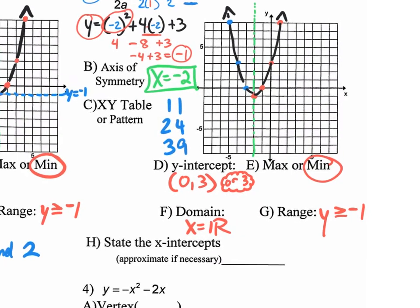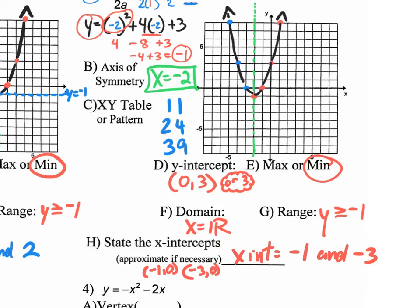Last but not least, state the x-intercepts — where it crosses the x-axis, approximate if necessary. It crosses here and here, at negative 1 and negative 3. So the x-intercepts are x equals negative 1 and negative 3. If you wanted to, you could give coordinates: negative 1 comma 0 and negative 3 comma 0. But just the values are good enough. Same thing with the y-intercept — you could give the coordinate or just the value.